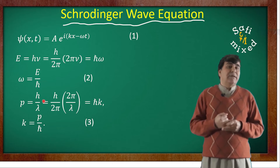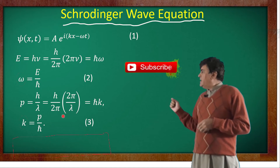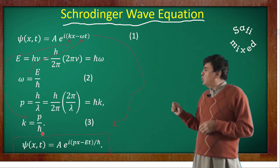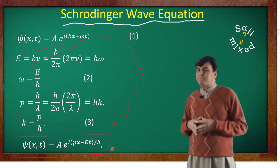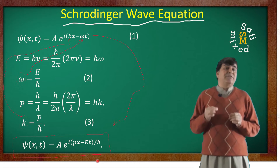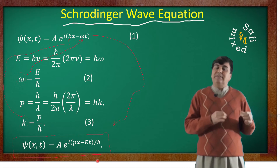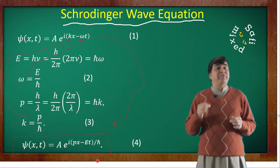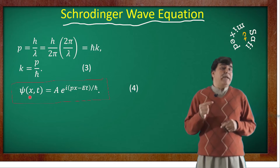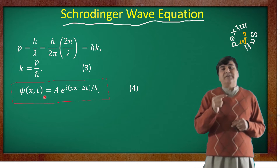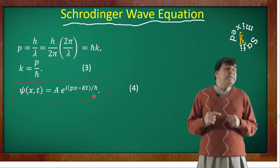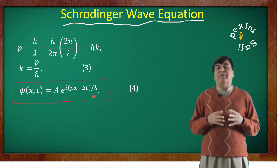Substituting the values of Omega and K from equations 2 and 3 into equation 1, the wave function becomes: psi of X and T equals A times exponent of iota times (pX minus Et) divided by h-bar — equation 4. The wave function in equation 4 carries the information of the particle nature of photons and the wave nature of particles, obtained by using Einstein's equation and the de Broglie equation respectively.